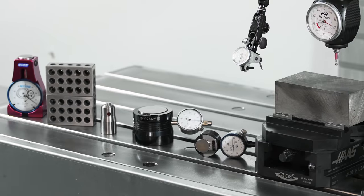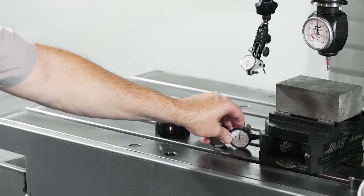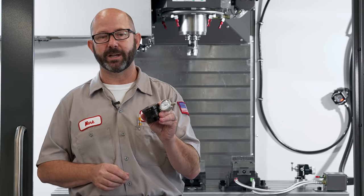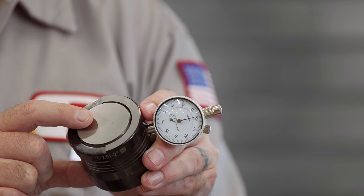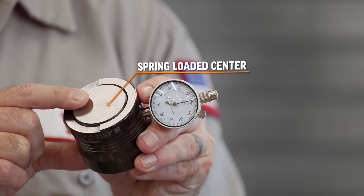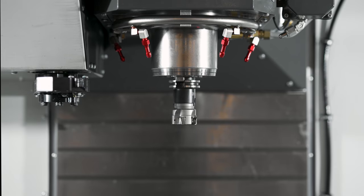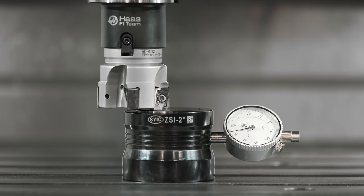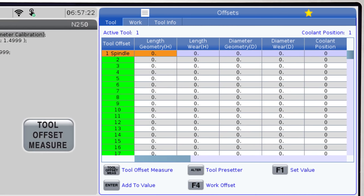These are a handful of tool height gauges, tool setters from my box that we can use to set our tools manually. Let's start with this Z-axis tool setter. It has been ground to exactly two inches thick and has a spring-loaded center tied to this precision indicator. We will load up our tool, jog it down onto the setter until our dial reads zero, and then press the tool offset measure button while our tool offset is highlighted.